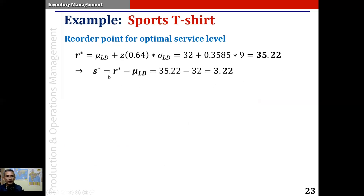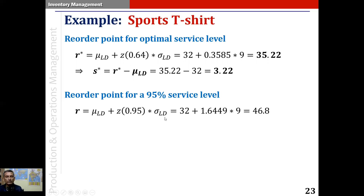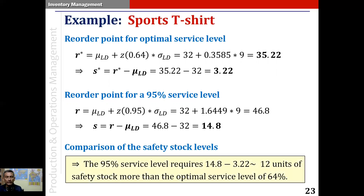The safety stock at the optimal service level is S-star equals R-star minus mu-LD, which turns out to be 3.22 units. If we instead go for the 95% service level, the reorder point uses Z of 0.95 instead of Z of 0.64, giving mu-LD plus Z(0.95) × sigma-LD equal to 46.8 units. The corresponding safety stock is 14.8 units — about 12 units more than at the optimal 64% service level.